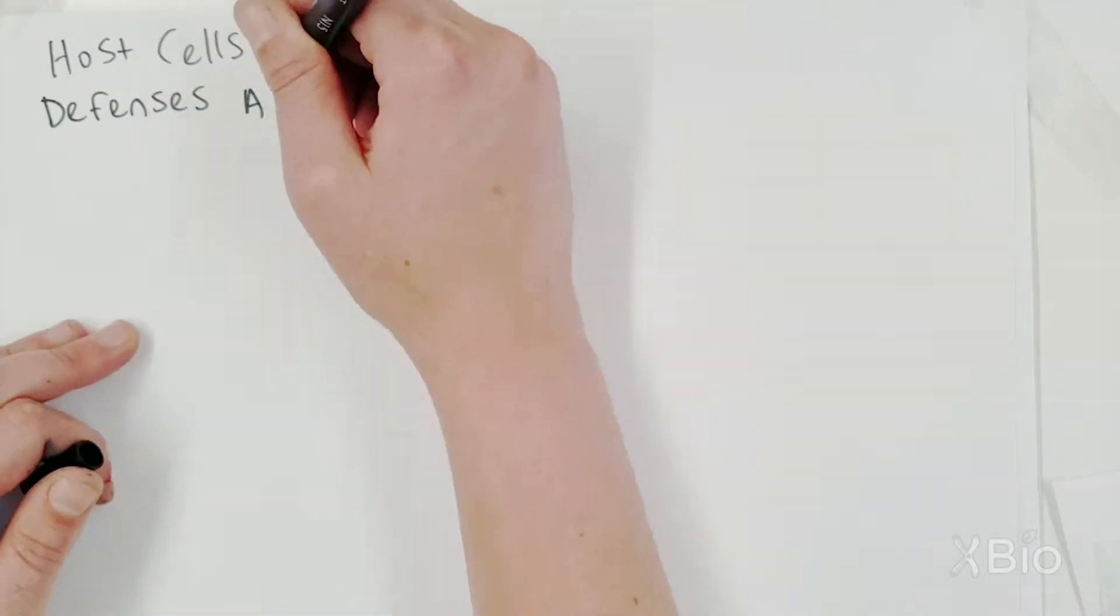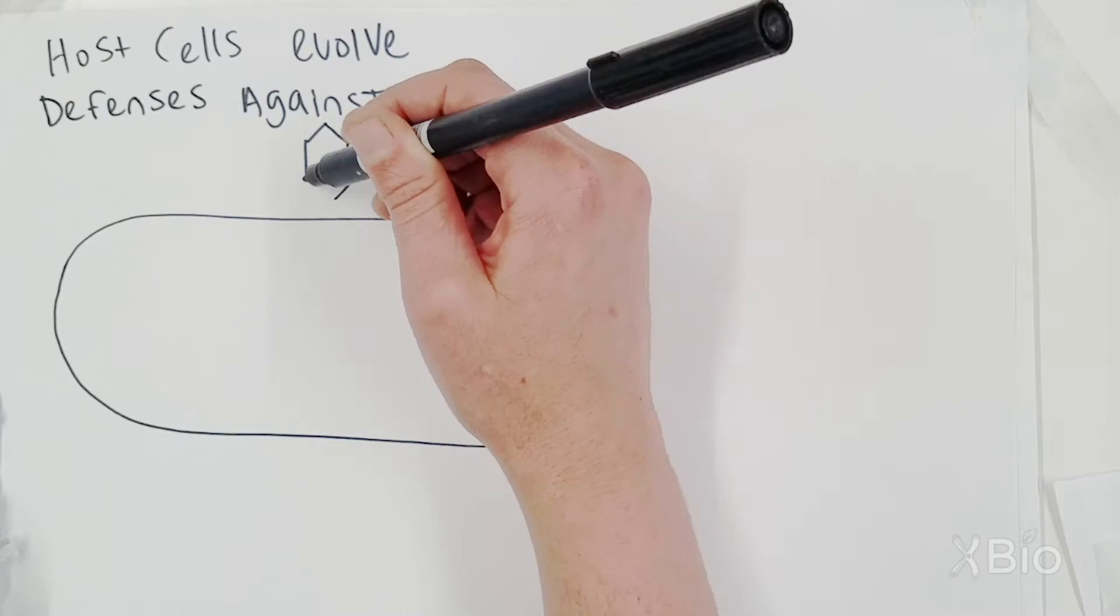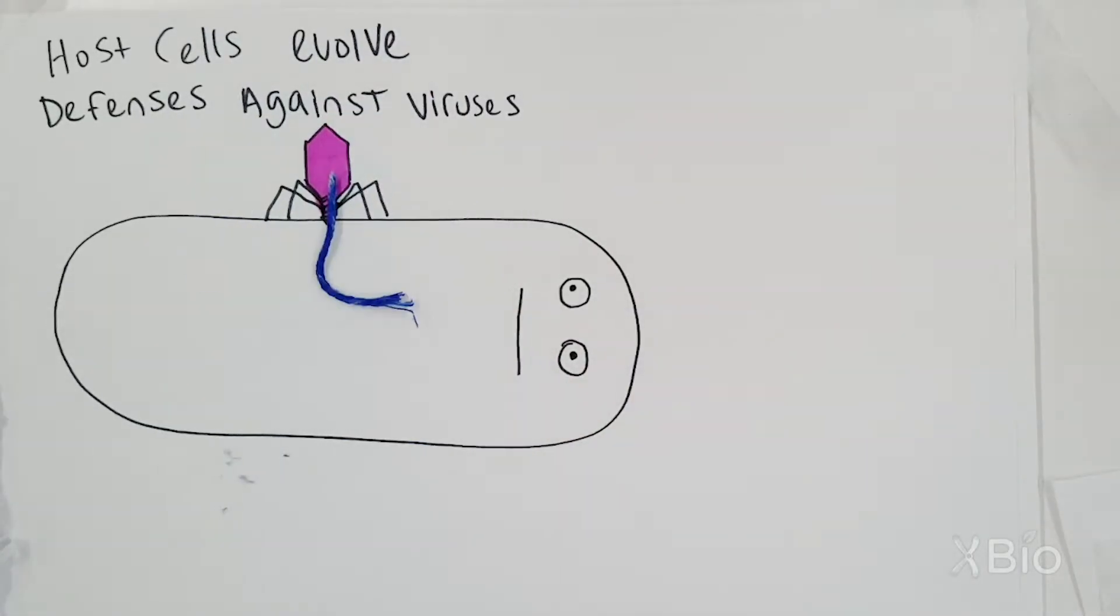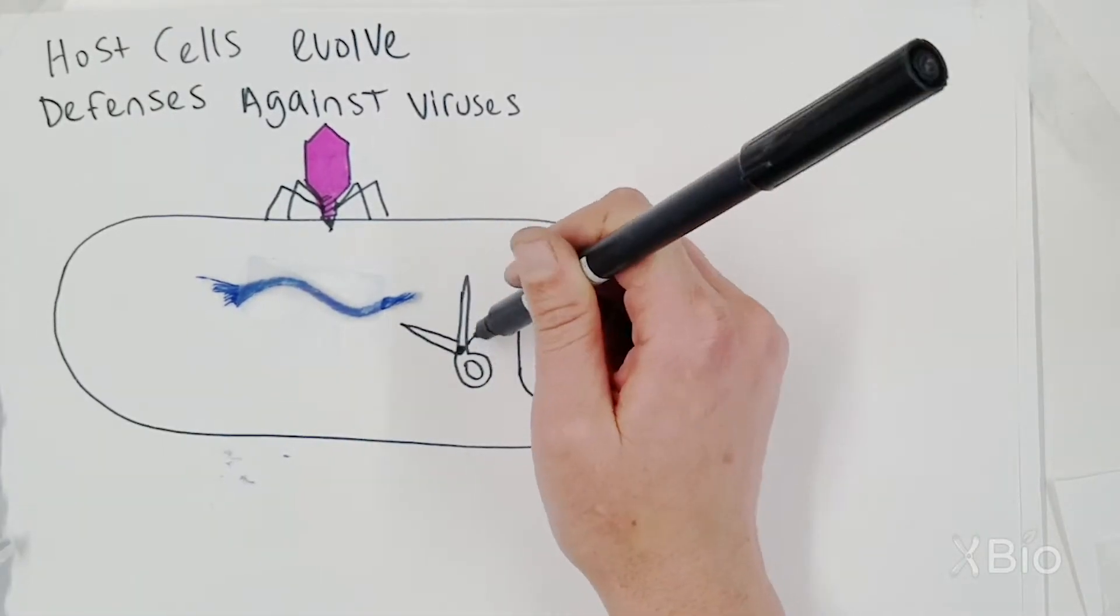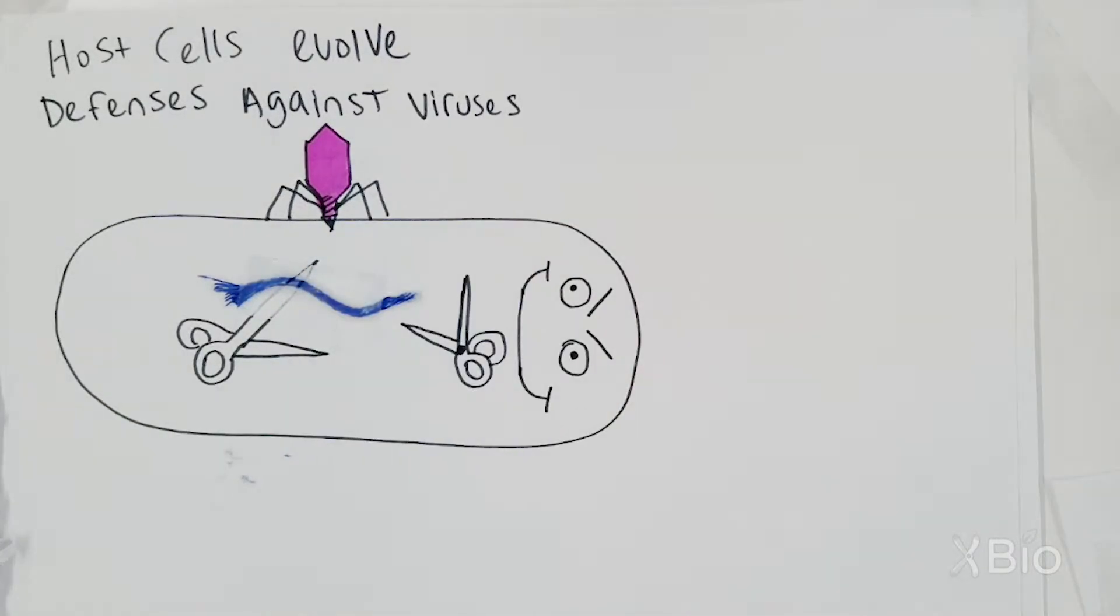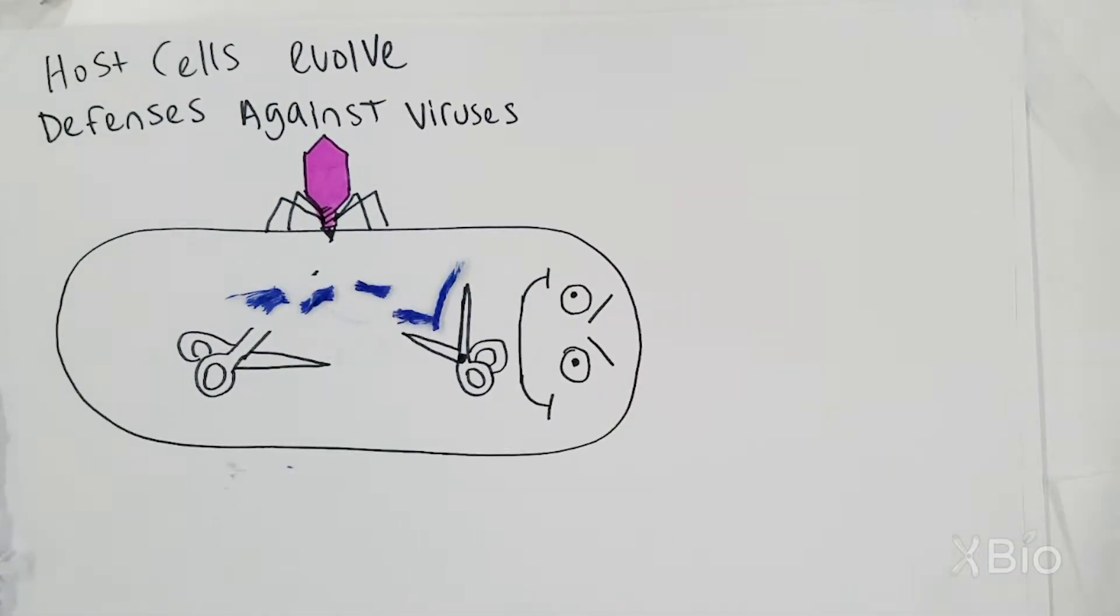Host cells, like bacteria, have evolved many types of defenses against viruses. For example, bacteria have evolved protein scissors to tear apart the genetic material of viruses as soon as they enter the cell.